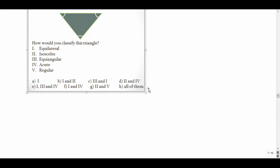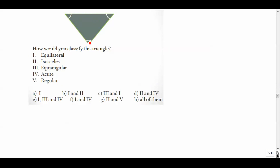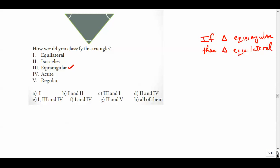How about this one? We've got angle markings showing all the angles are the same. When that's the case, it's equiangular. And if a triangle is equiangular — this is a conditional statement — the conclusion is that it is equilateral as well. So all the sides are the same. We know that in isosceles triangles at least two sides are congruent; in this case all three are, so it's isosceles. All these angles are 60 degrees, so it's acute. And the word regular applies as well. So it's all of them — letter H.